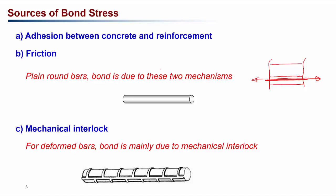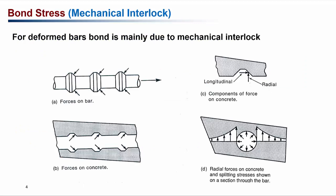For deformed bars, the bond is mainly due to the mechanical interlocking provided by the deformations on the steel bars. The bearing on the deformed bars transfers the force between the concrete and the steel. Equal and opposite forces act on the concrete, and these forces have two components: the radial component and the longitudinal component. When there is excessive bond stress, splitting of the concrete can occur due to these excessive radial stresses, especially if there is not adequate cover.